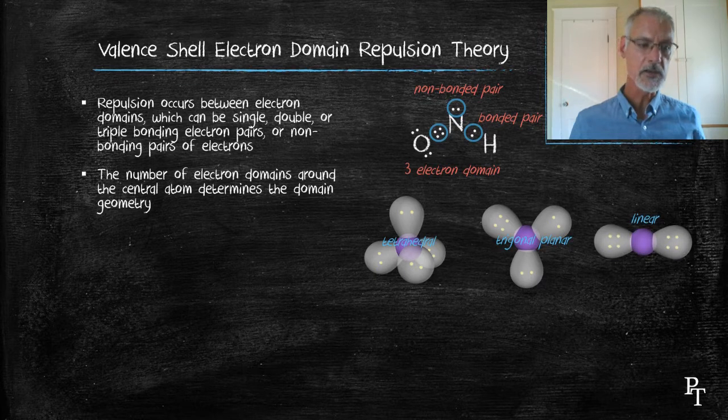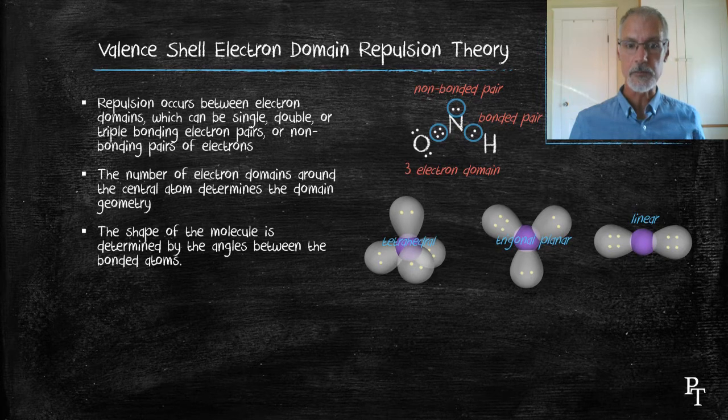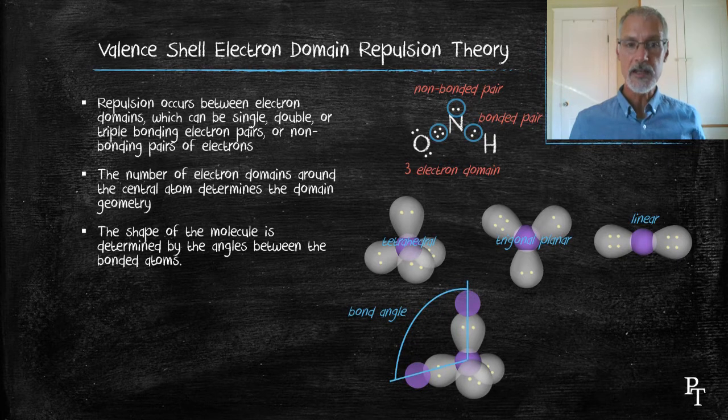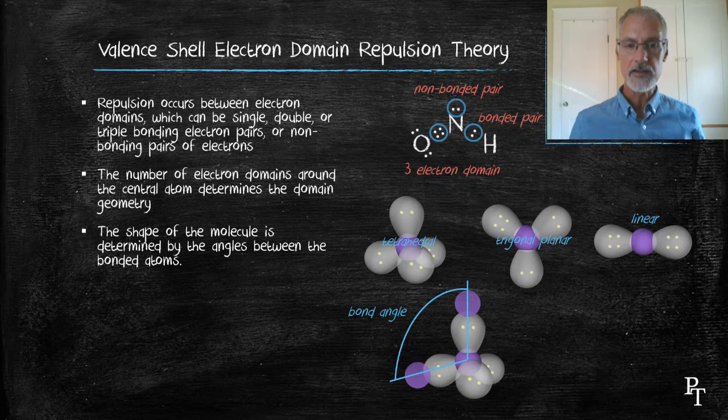The shape of a molecule is determined by the angles that exist between the atoms. So here I have a picture of a molecule, the purple designating the location of atoms. So my bond angle is between those purple spheres, not the electrons.